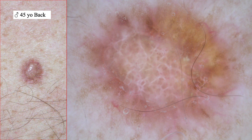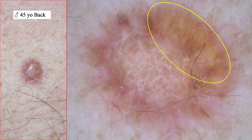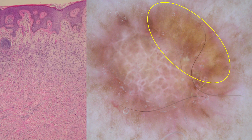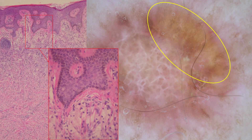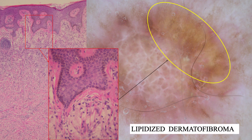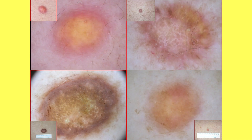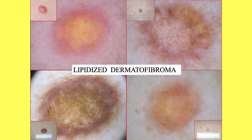If we perform a biopsy of the yellowish area, this may correspond histologically to areas of lipidization with lipophages and xanthoma cells, as we can see in this slide. Remember: if we see yellowish color in the context of a dermatofibroma, this may be a lipidized dermatofibroma.